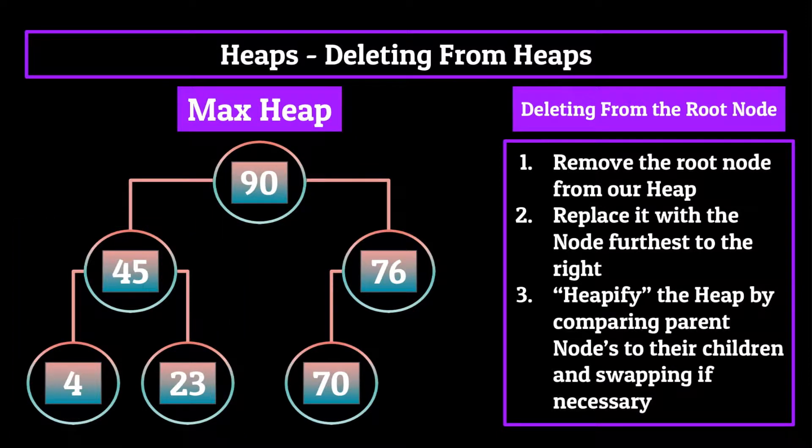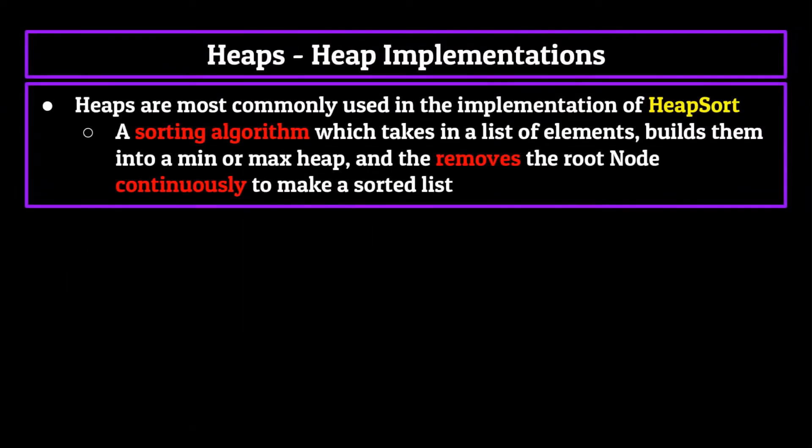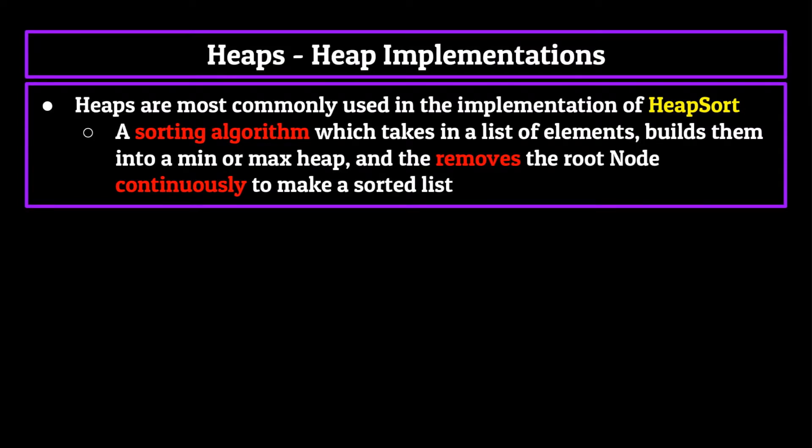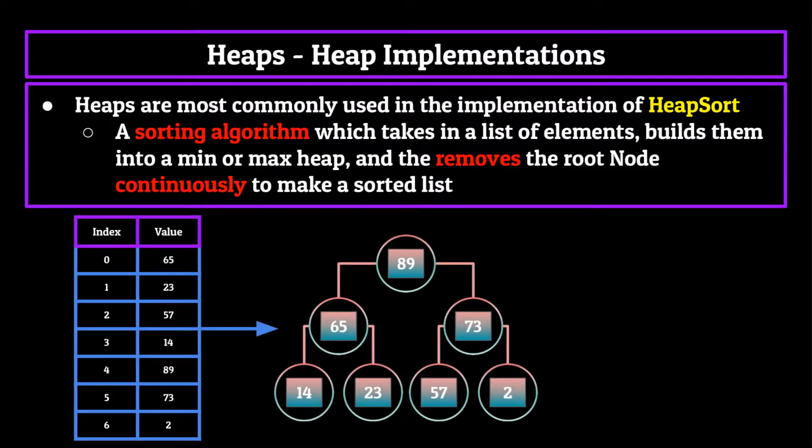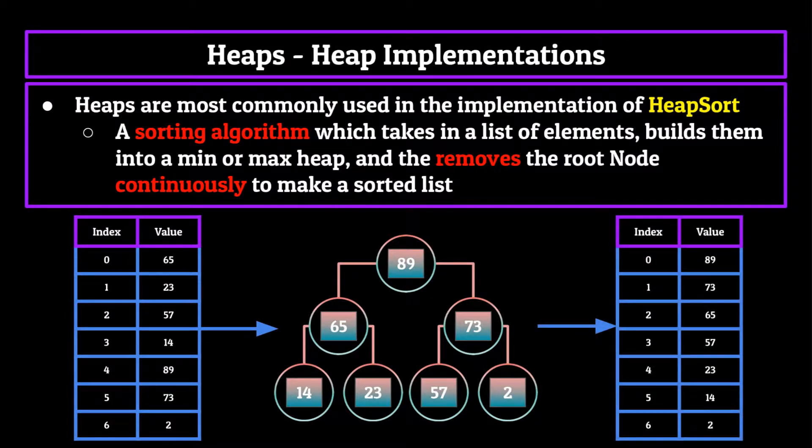That's inserting and deleting nodes in a nutshell. Now let's talk about how we can use this to our advantage. Heaps are most commonly used in the implementation of heap sort. Heap sort is a sorting algorithm which takes in a list of elements, builds them into a min or max heap, and then removes the root node continuously to make a sorted list. Because heaps always start with the minimum or maximum value contained within them, we're able to just remove the root node over and over again, heapifying our data structure after every pass until we remove every element and are left with a sorted list.